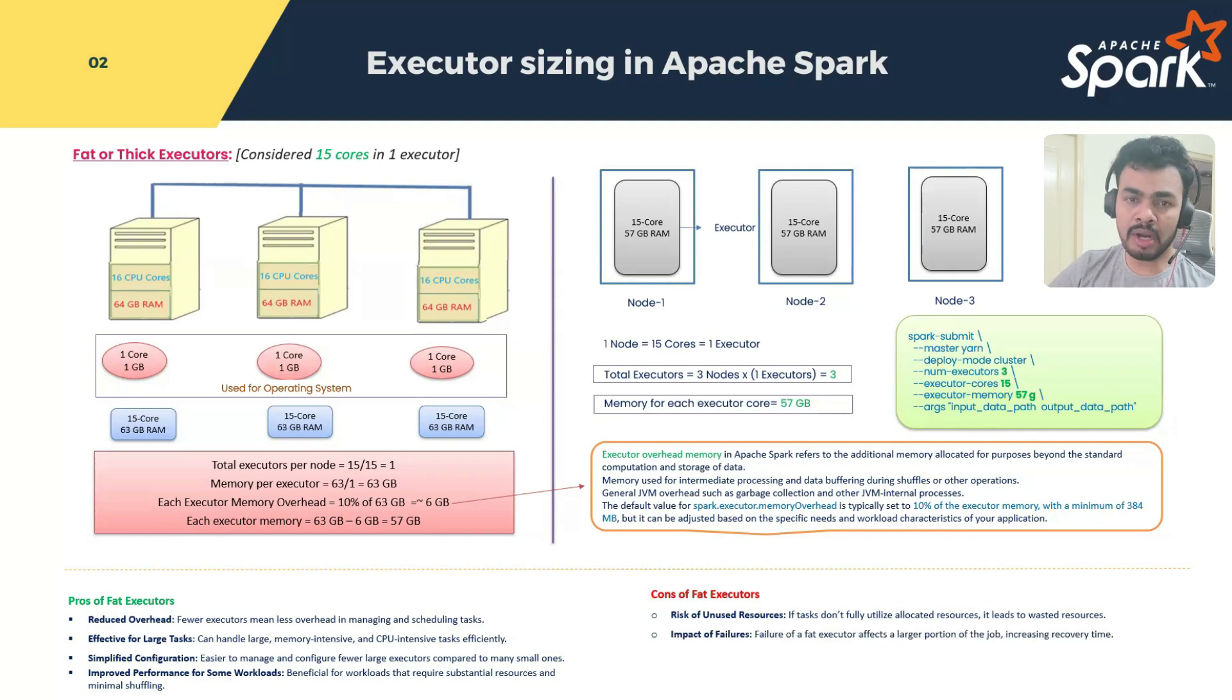Impact of failures. What if during execution, if that executor goes down, the entire 15 cores of data, whatever they are processing, will be lost. Very difficult to recover the failures in failure case. Scalability issues. As I said, scalability, because we have a very less number of executors, and scalability is also a bottleneck.